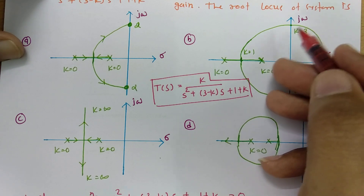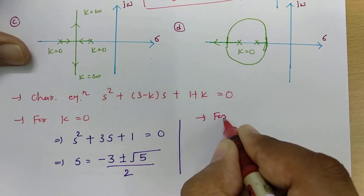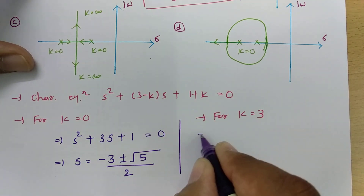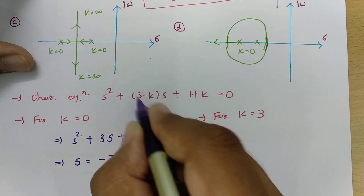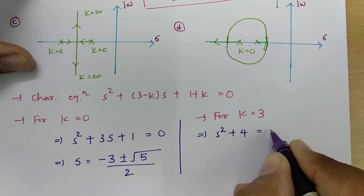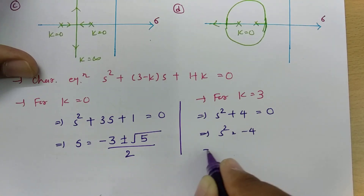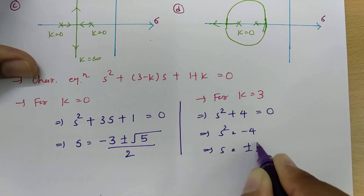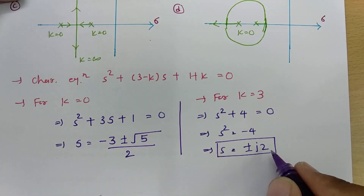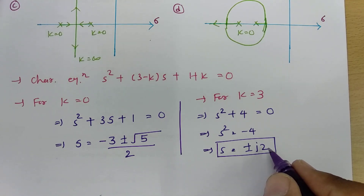Now let us check for k equals 3. Placing k equals 3 into the characteristic equation gives s squared plus 3 minus 3 times s plus 1 plus 3, which simplifies to s squared plus 0 times s plus 4 equals 0, so s squared plus 4 equals 0. Therefore s squared equals minus 4, and s equals plus or minus j2. At k equals 3, the roots are at plus or minus j2 on the imaginary axis.